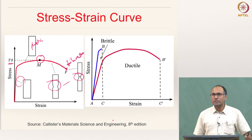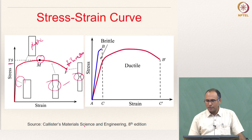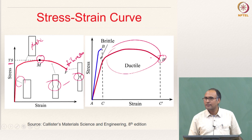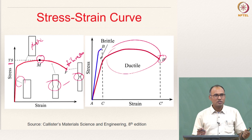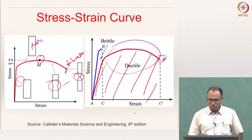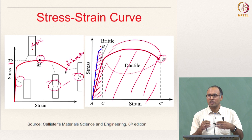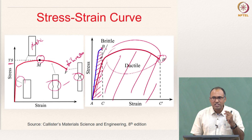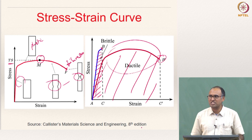If you take a ductile material and a brittle material, typically the stress-strain curves look something like this. For a ductile material, you will have nice elastic deformation and an extended plastic deformation — a lot of energy is dissipated through plastic deformation and then eventually it breaks. Whereas in the case of brittle materials, your yield strength is going to be higher — it can actually resist higher stresses — but it cannot store more energy. The brittle material will break without giving any signs; there is no plastic deformation, so you will not be able to see that it is actually going to break — the breaking happens suddenly.